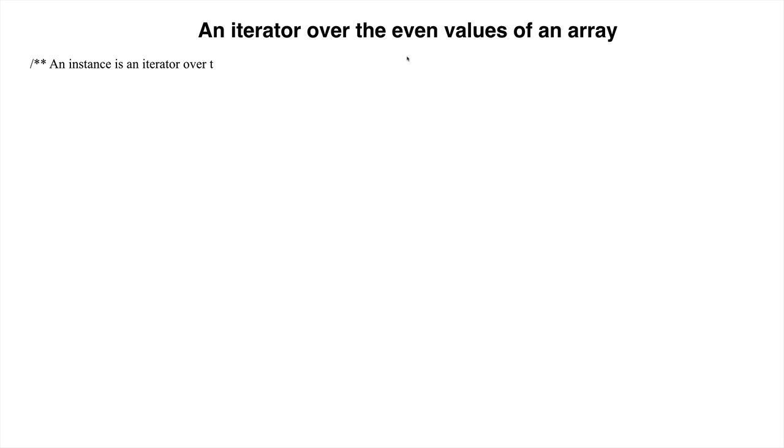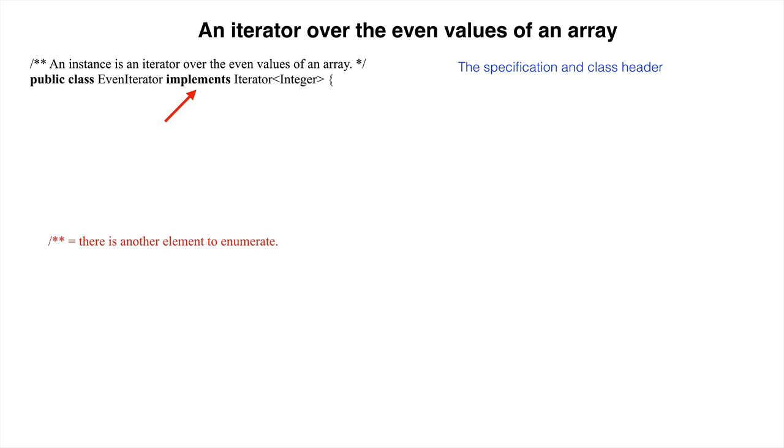Here is the start of a class whose objects are iterators over even values of integer arrays. It implements interface iterator. Because of that, we stub in required methods hasNext and next.